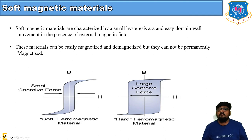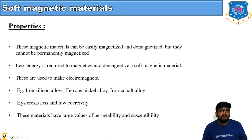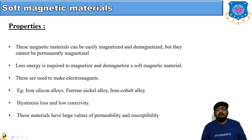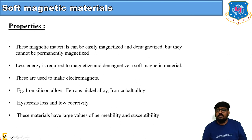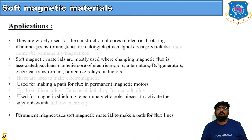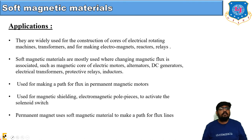Soft ferromagnetic materials are characterized by a small hysteresis loop area and easy domain wall movement in the presence of an external magnetic field. They can be easily magnetized and demagnetized but cannot be made permanently magnetized. Less energy is required to magnetize and demagnetize them. Examples include iron-silicon alloy, ferrous-nickel alloy, and iron-cobalt alloy. They have low hysteresis loss, low coercivity, and large values of permeability and susceptibility.